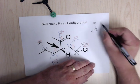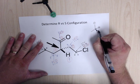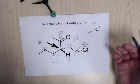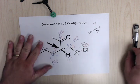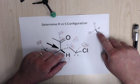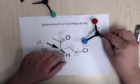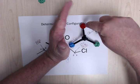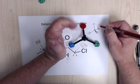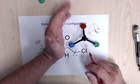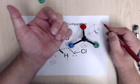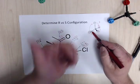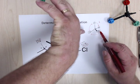There are two methods for determining R or S. The first is the hand method: point your thumb toward where group 4 is — here it's coming out at you. Point your thumb toward the camera and curl your fingertips from 1 to 2 to 3. Since I'm using my left hand, it's S. The nice thing about the hand method is you can orient your thumb wherever group 4 is pointing.